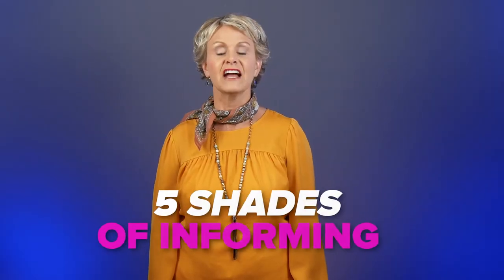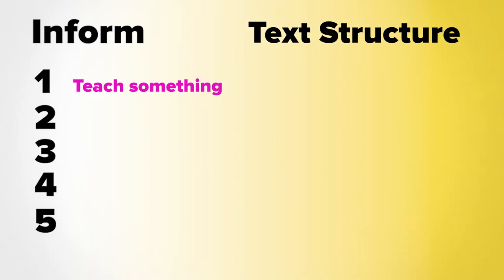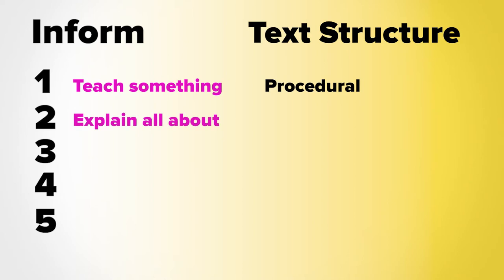So when revealing the informational text structures, do so by defining five shades of informing. Number one: if the author wants to teach the reader how something works, then he must use a procedural step-by-step text structure. Number two: if the author wants to explain all about a concept, then he must use a descriptive or categorical text structure.